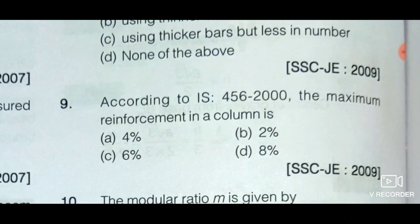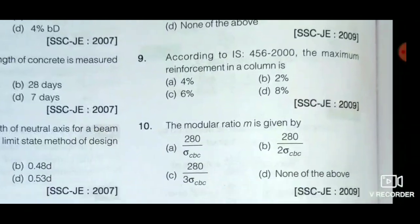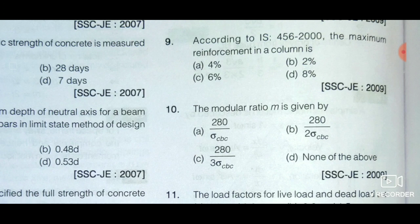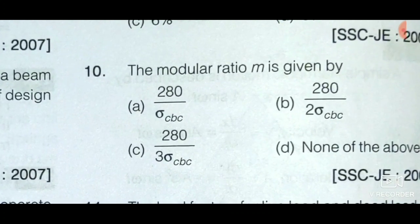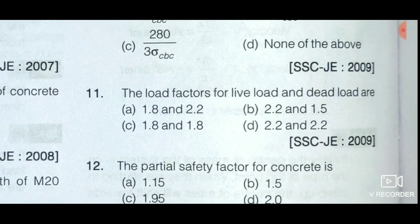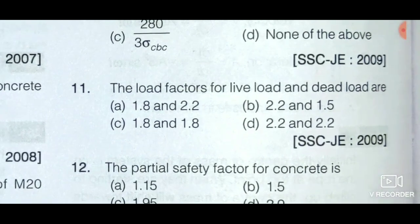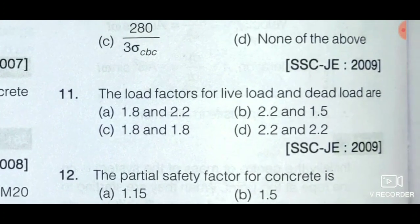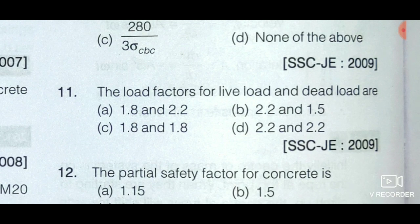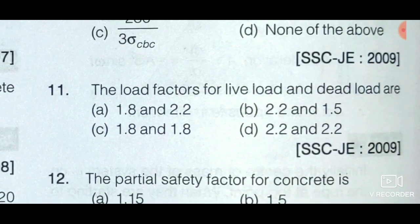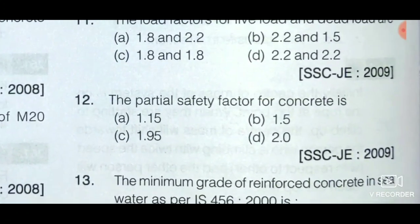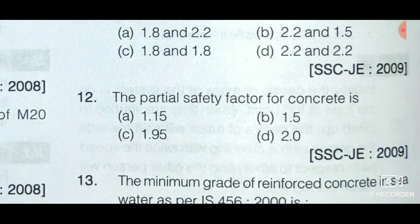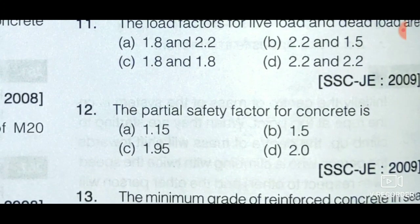Next question: According to IS 456:2000, the maximum reinforcement in a column is 6% — option C is the correct answer. Next: The modular ratio m is given by 280 divided by 3σcbc — option C is the correct answer. Next: The load factors for live load and dead load — option D is the correct answer: 2.2 and 2.2 for both, as the load factor is considered greater than 2 for both when design is based on failure loads. The partial safety factor for concrete is 1.5 — option B is correct. The partial safety factor for steel is 1.15.